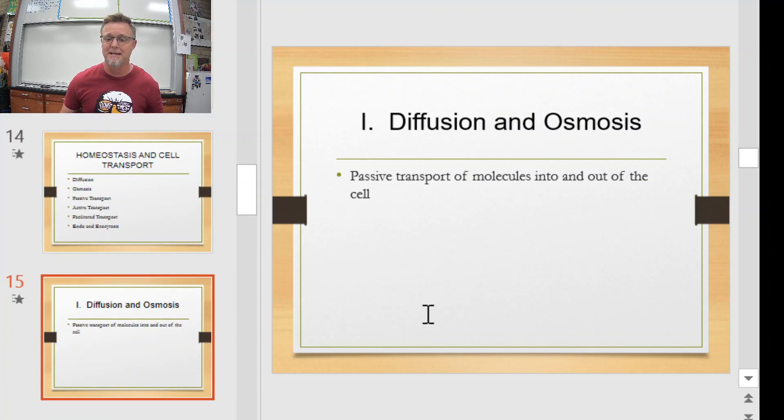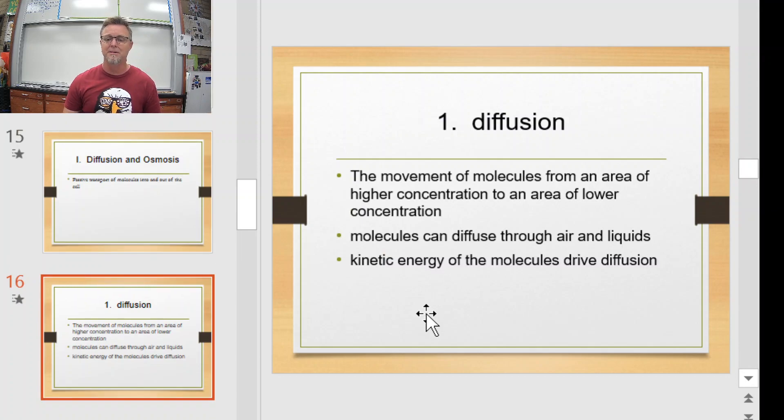Diffusion. Diffusion, as I said, is passive transport of molecules into and out of a cell. And simply put, we're going to move molecules from an area of high concentration to an area of lower concentration. So if I got a lot of something over here and very little over here, that something is going to go that way. You could think of putting a drop of dye in water. Diffusion, right? Air freshener. You spray it in the air and it spreads out to the room. Diffusion.